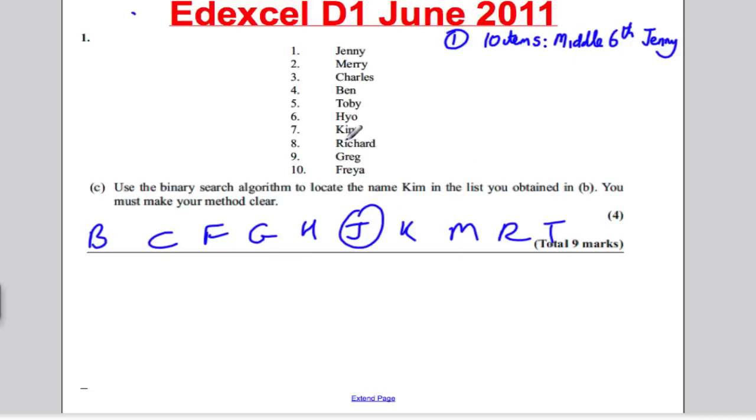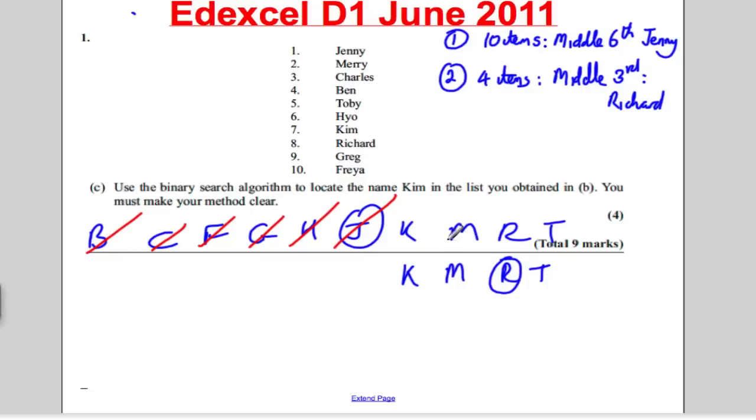Now if you're looking for Kim, you would know that Kim must come after Jenny. So what you would do is you would cross off Jenny and all the items before it, and your new list would therefore be K, M, R, and T. And your second working would be four items. Middle would be the third out of those, which would be R, which would be Richard. So Richard is your pivot, but you know if you look for Kim, Kim would be before, so you cross off Richard and anything after him, and your next list then would be K and M.